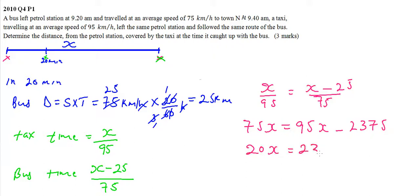Divide both sides by 20 and you get X equals 118.75 kilometers. This is the distance from the petrol station to the point where the taxi overtook the bus. That's how you work out that question.